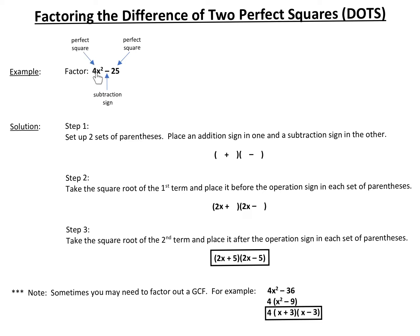This right here is a perfect square. The square root of 4 is 2, and the square root of x squared is x. 2x times 2x gives you 4x squared. And this number is a perfect square — the square root of 25 is 5, because 5 times 5 is 25.